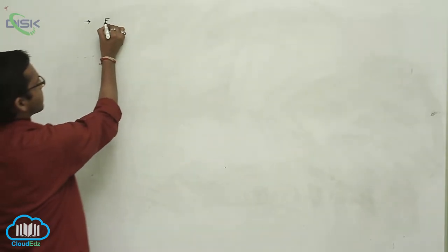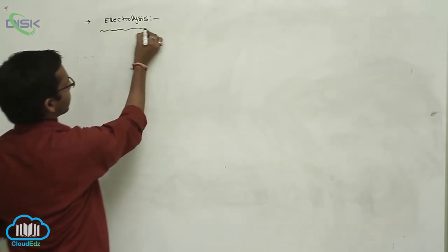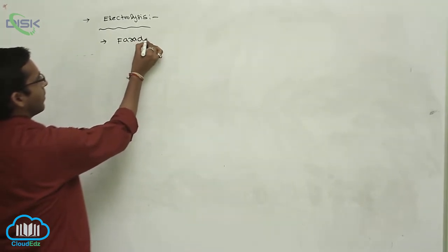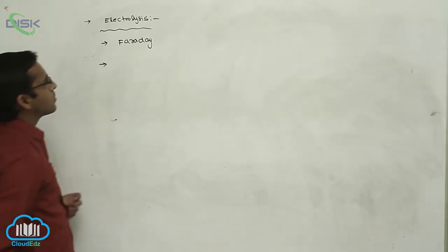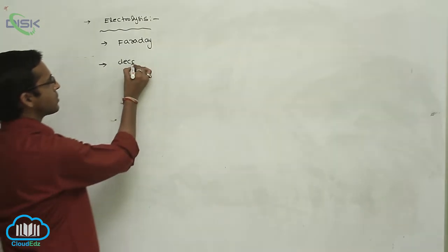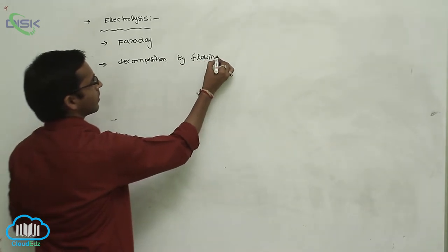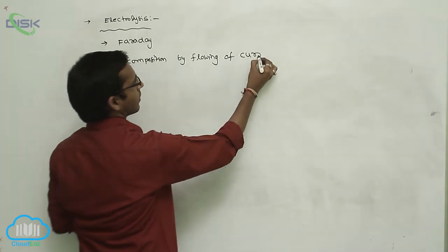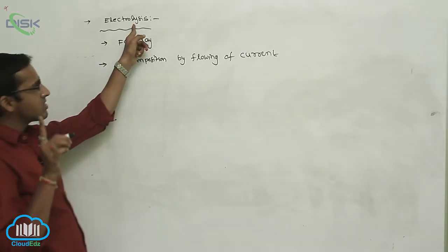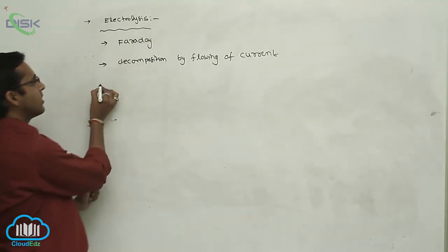We have discussed Electrolysis. This word 'Electrolysis' was proposed by Faraday. Electrolysis means a chemical substance undergoes decomposition by the flowing of current. The lysis of a chemical substance in the presence of current is called Electrolysis.